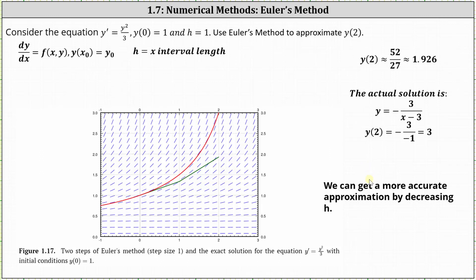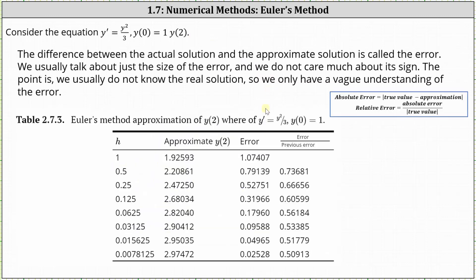One way to get a more accurate approximation would be to decrease h. We used h equals one, but if we use h equals 0.5, 0.25, or even 0.1, we would get a better approximation. The difference between the actual solution and the approximate solution is called the error. We usually talk about just the size of the error and do not care much about its sign. The absolute error is equal to the absolute value of the difference of the true value and the approximation. The relative error, normally given as a percentage, is equal to the absolute error divided by the absolute value of the true value. The table below shows the approximations using smaller values of h — notice as h decreases, the approximations get closer and closer to three, which is the true value of y of two.